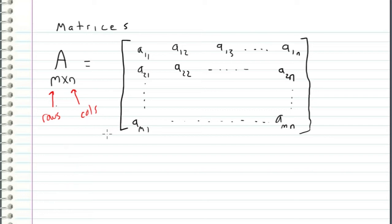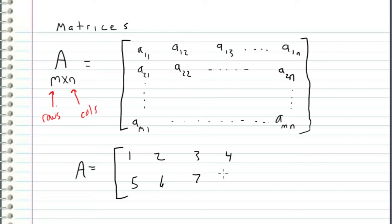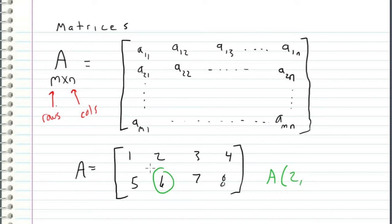For example, if I have the matrix A defined as 1, 2, 3, 4 in the first row and 5, 6, 7, 8 in the second row, I can refer to the number 6 as A_22 — it's in the second row and the second column, so we get 2 again. So I can refer to 6 as A_22.